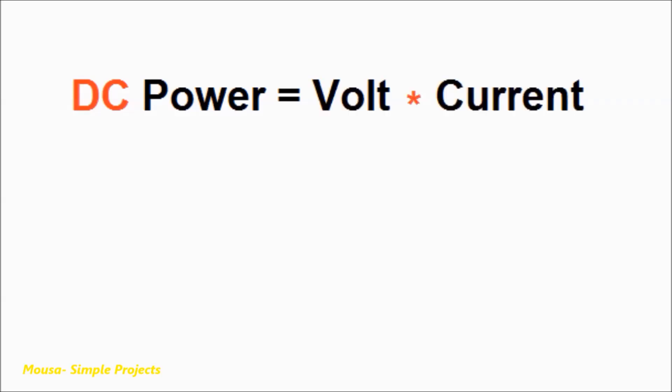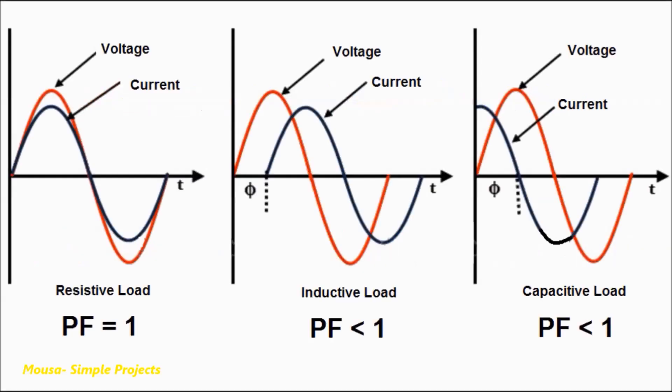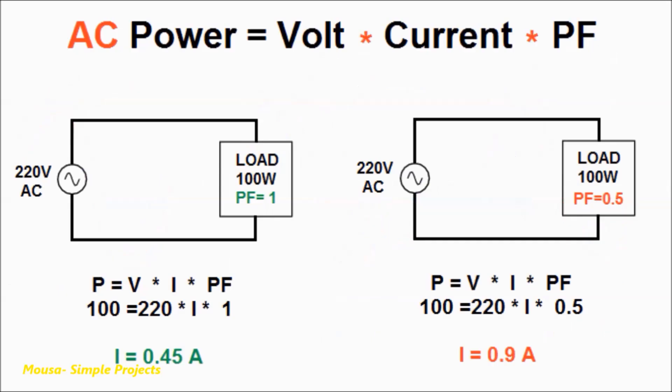The power in AC devices is equal to voltage times current times power factor. Power factor is a number between zero and one which refers to the phase shift between current and voltage.